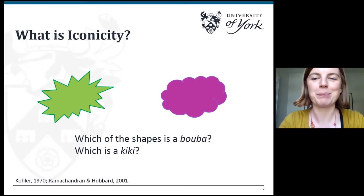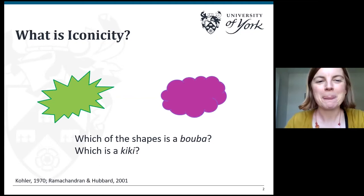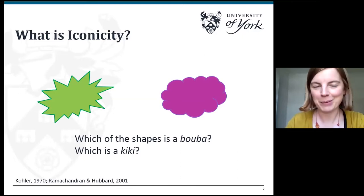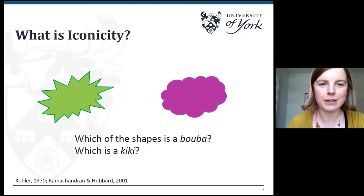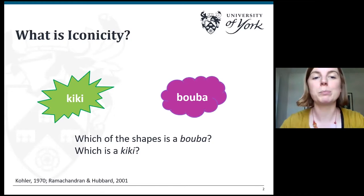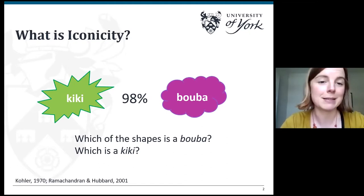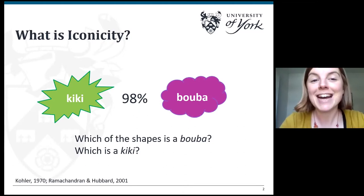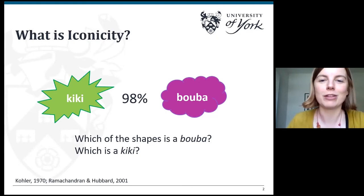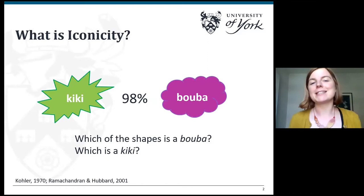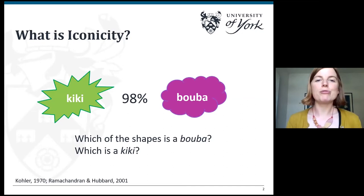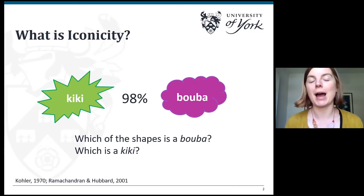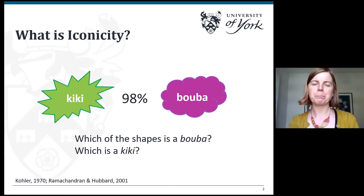If you thought that the green shape was a kiki and the purple shape was a booba, you would be in agreement with 98% of respondents who have participated in this experiment across cultures and across ages. I can see in the results that 95% of you thought the purple shape was the booba and the green shape was the kiki. This is a great example of iconicity — there's something spiky sounding about the word kiki and something round sounding about the word booba. This is called sound symbolism: the idea that we associate certain kinds of physical properties with certain sounds.